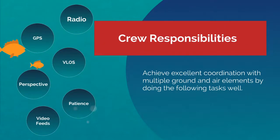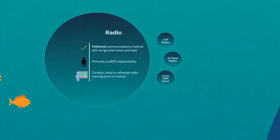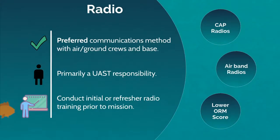Strong execution of these six responsibilities will help you achieve excellent coordination with multiple ground and air elements. Radios are by far the preferred way to communicate within Civil Air Patrol. You'll assign primary radio responsibility to your first technician, but the pilot will still have a radio. Be sure to brush up on your radio skills or conduct refresher training if the crew is rusty or green.